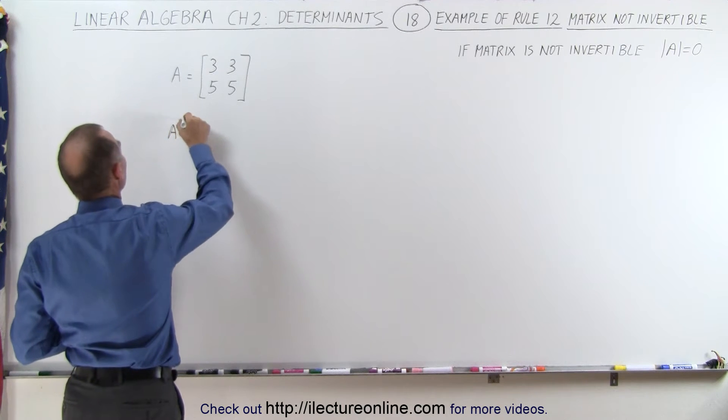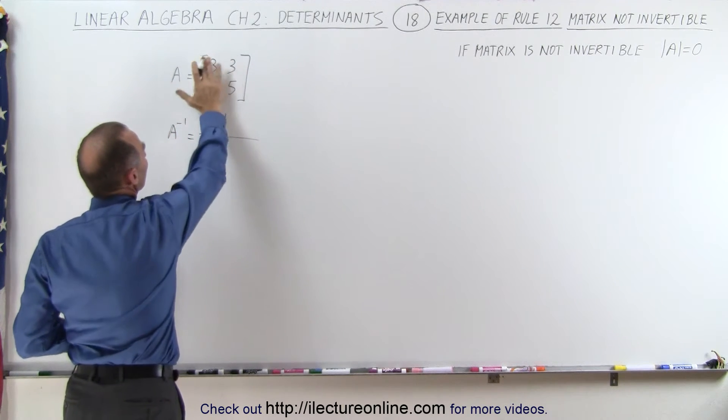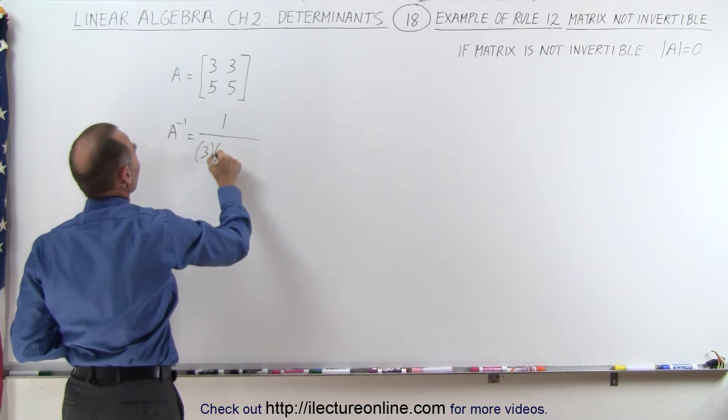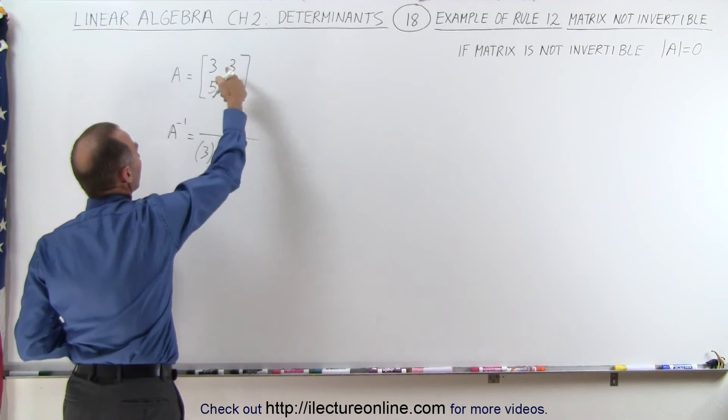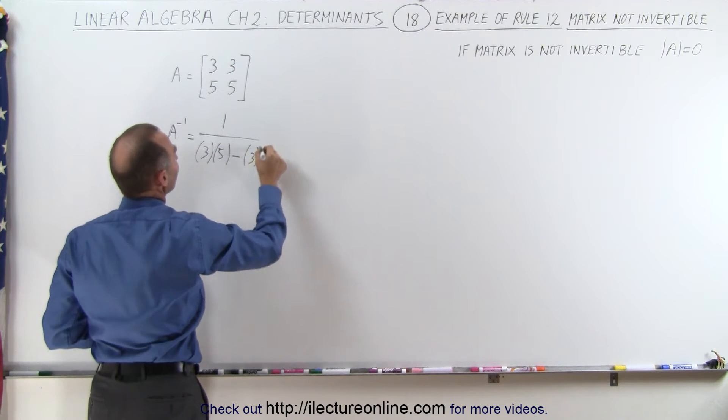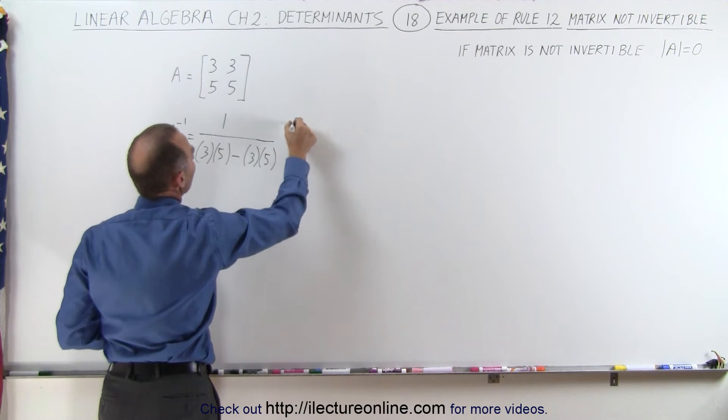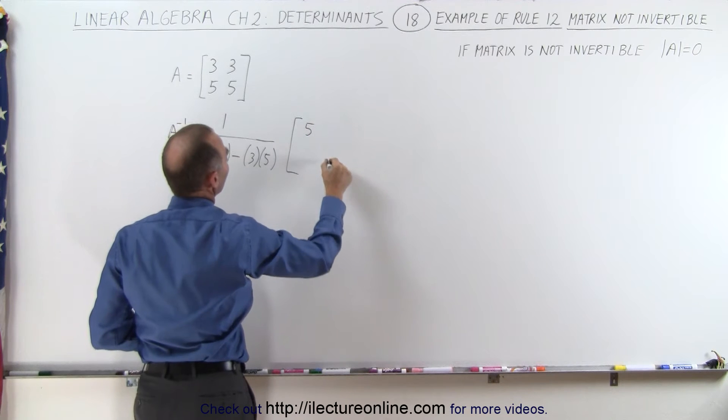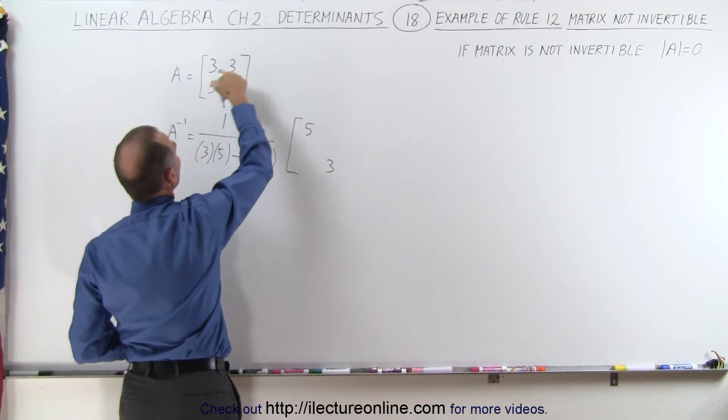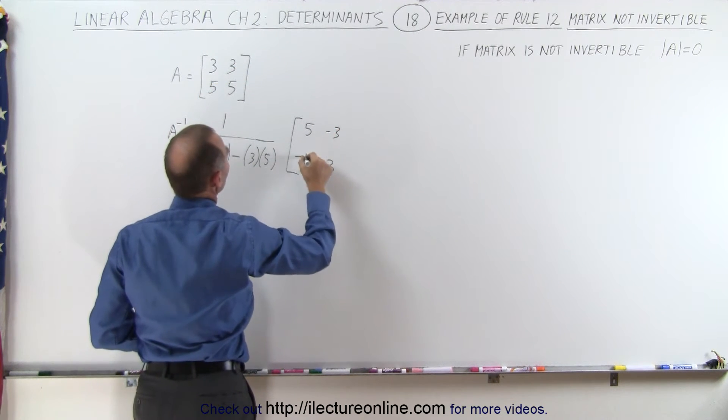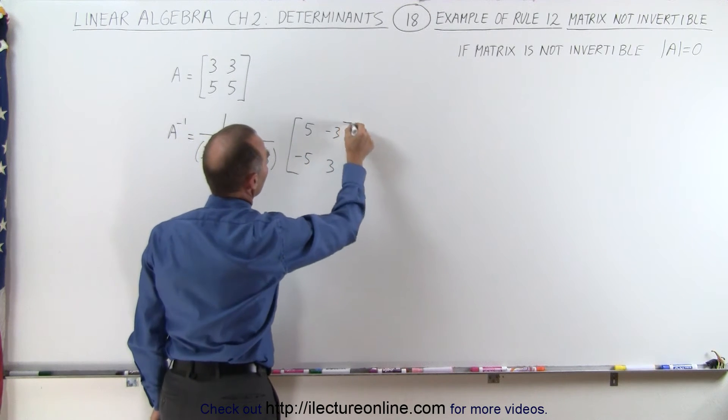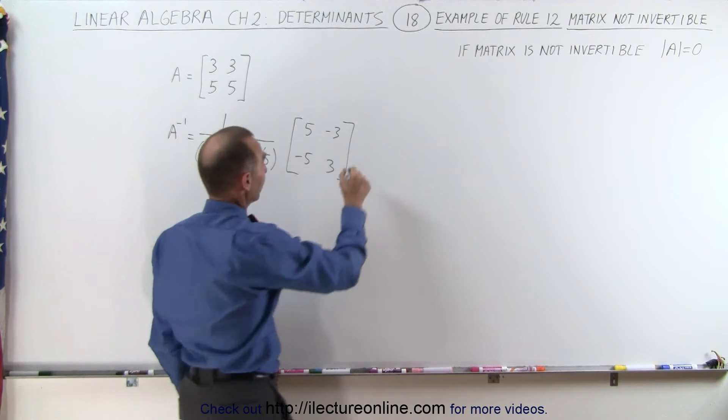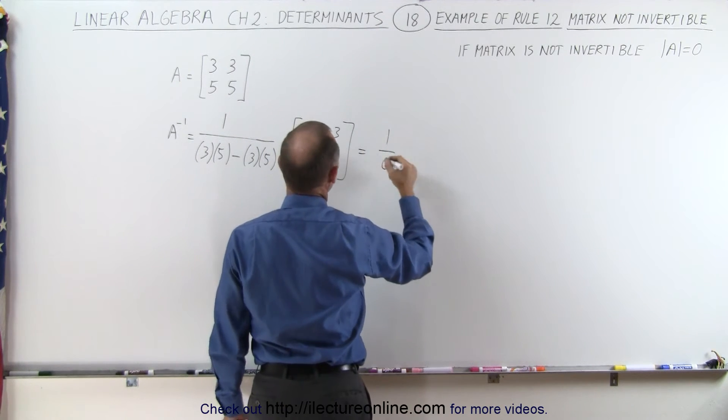The inverse of matrix A is equal to 1 divided by the determinant of this matrix which is the product of these two elements 3 times 5 minus the product of those which is 3 times 5 times the matrix which can be found by interchanging these two elements this becomes 5 this becomes 3 and changing the sign of those two which this becomes minus 3 and this becomes minus 5. Now notice here we have 1 over 15 minus 15 which means this is 1 over 0. This is 1 divided by 0 which is undefined.